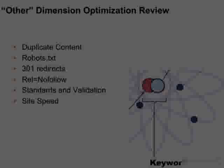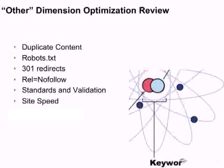We covered a lot of material in our SEO fundamentals and best practices, including information on other dimension optimization. We looked at duplicate content issues — what the problems are and how to fix them with robots.txt, 301 redirects, and rel nofollow. We looked at ideas for standards and validation and how they may or may not impact SEO. And we looked at how to improve and test the speed of your site to ensure a lower page abandonment rate.